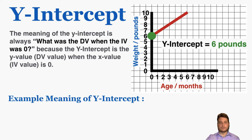The meaning of the y-intercept is even more straightforward. The meaning of the y-intercept is always: what was the DV value when the IV was zero? Because the y-intercept is the y value when the x value is zero.